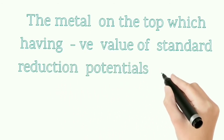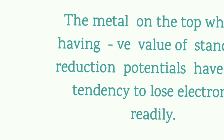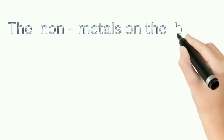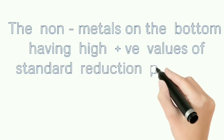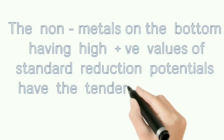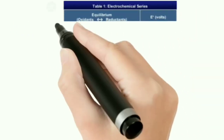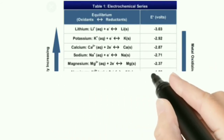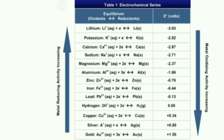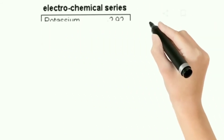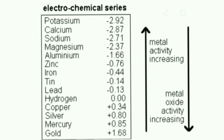Metals on the top, which have negative values of standard reduction potential, have the tendency to lose electrons readily — these are all active metals. Non-metals at the bottom, below hydrogen, have high positive values of standard reduction potential and have the tendency to accept electrons readily. For example, copper has an E° value of +0.337 V. From the top you have negative E° values, and coming down you have positive E° values.